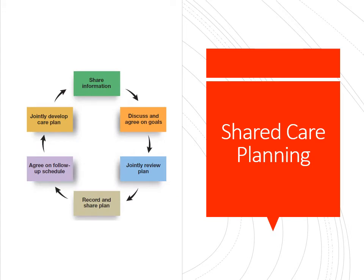The shared care planning process involves: sharing information — teach them as much as we can about their conditions; discussing and agreeing on goals, so letting them know 'you're not walking out with a Hollywood smile, our goal is to stop the progression of disease'; jointly reviewing the plan; recording and sharing the plan by giving the patient a copy and putting a copy in the record; and agreeing on follow-up schedules. If you say come back every three months and the patient says no, I'm coming back every six — they're not coming back in three months, so don't schedule them for that.